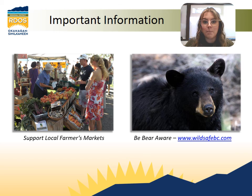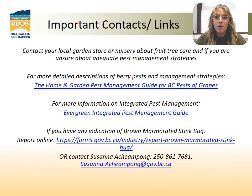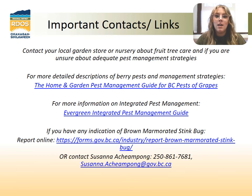For more information on pests that affect different fruit trees, there are fact sheets available on the RDOS website that are organized by fruit tree type. These are some important contacts and links that you should have readily available if you're considering planting a grapevine or already have one. There are two links you should read on general care and pest management tools that are extremely helpful and are important reference guides. If you have any indication of brown marmorated stink bug, you can contact Susanna or report it online with the BC Ministry of Agriculture.